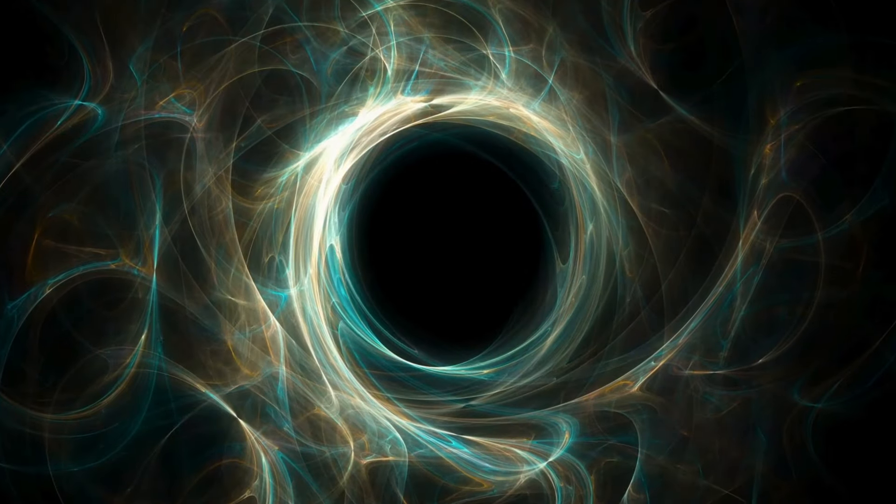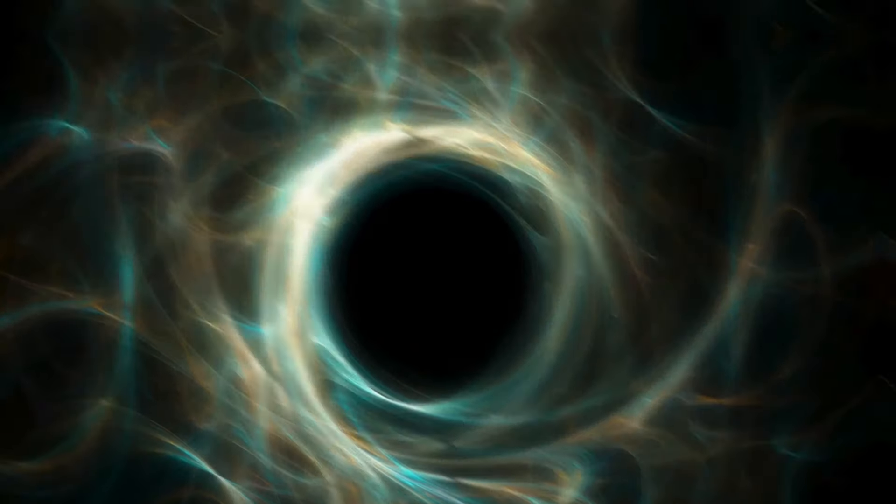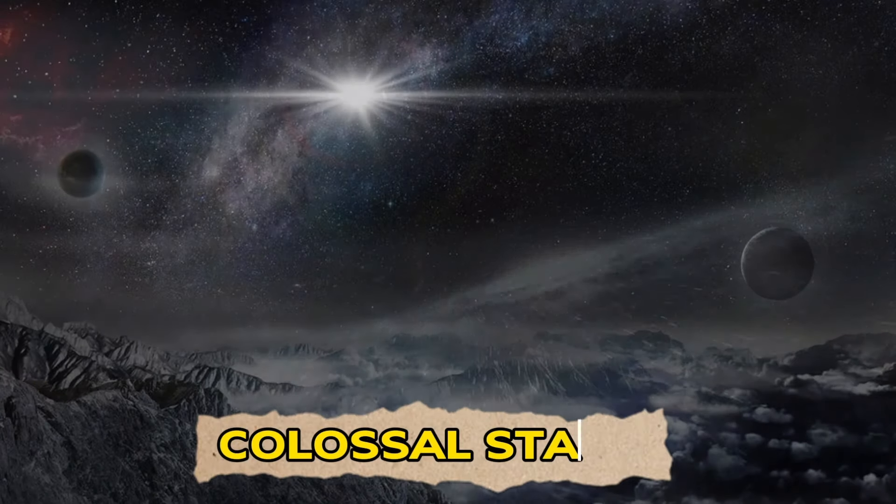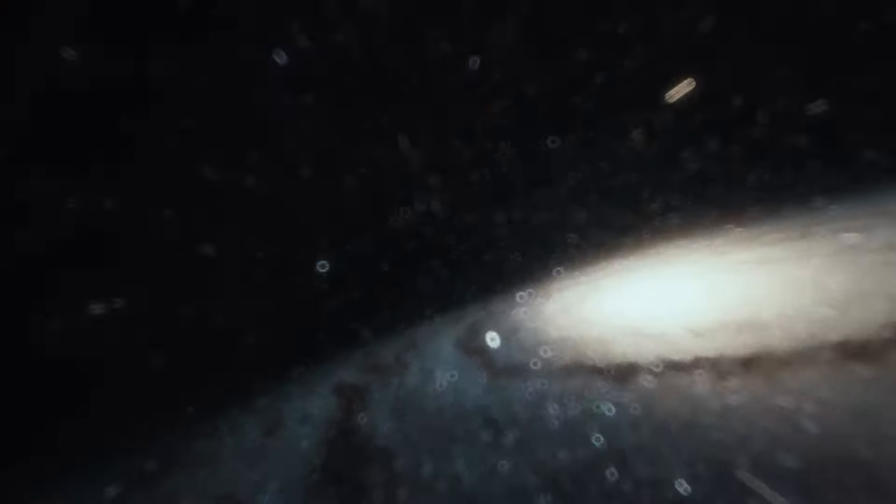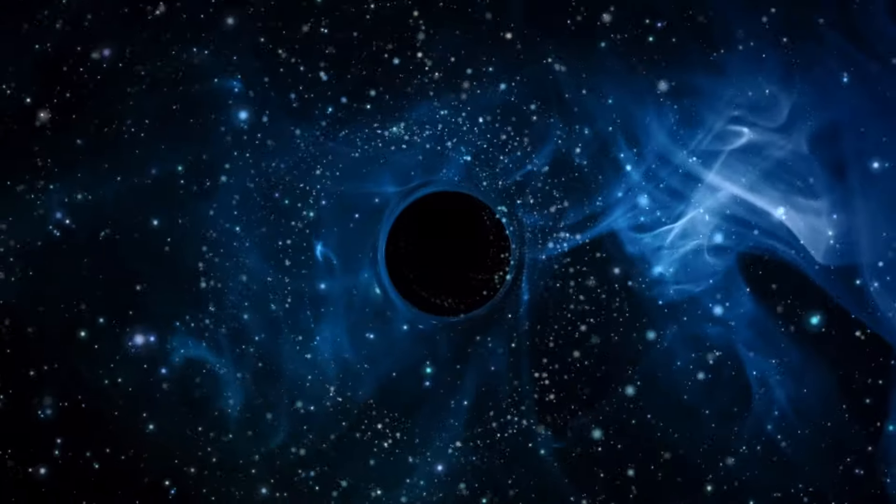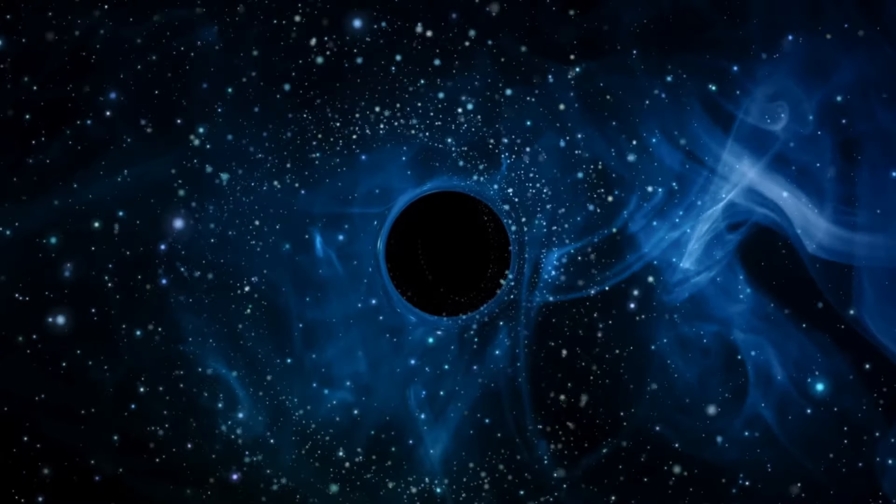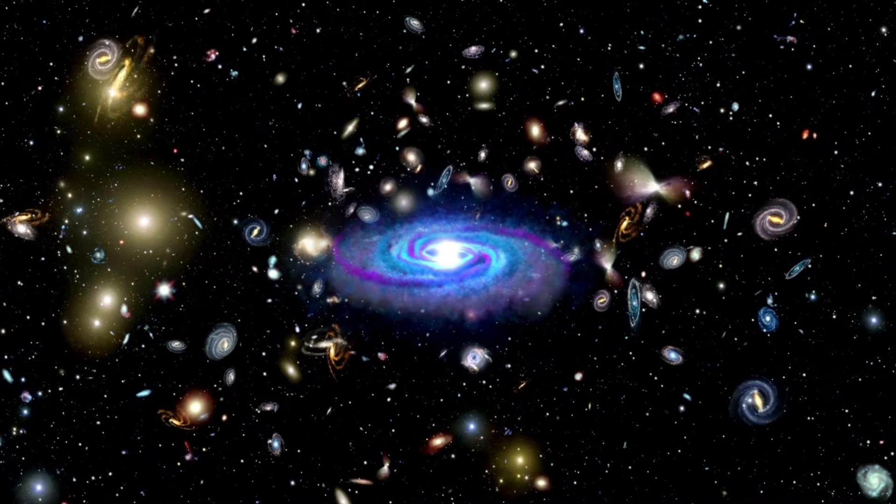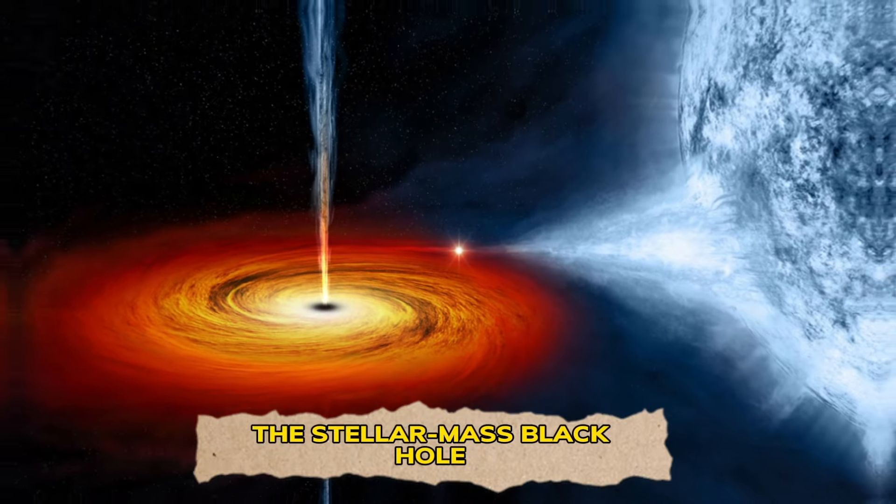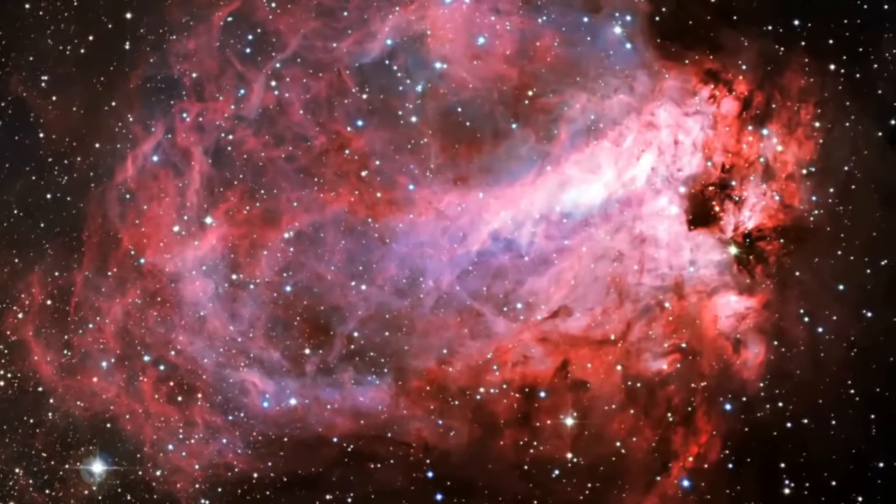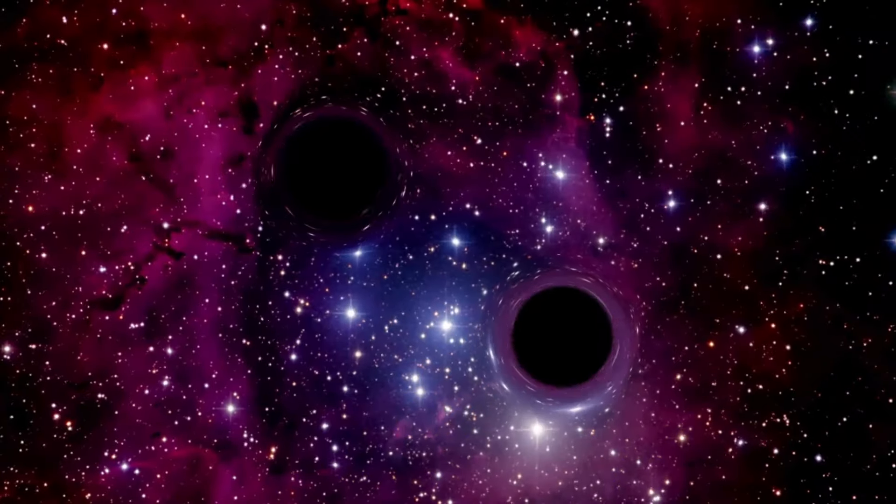The grandeur of black hole genesis unfolds in diverse forms, contingent upon their size and cosmic lineage. These mysteries might emerge from the remnants of colossal stars, their cores imploding under the weight of their ambitions, or through the clandestine convergence of galaxies, orchestrating the emergence of supermassive black holes, cosmic leviathans lurking at the hearts of galaxies. The most prevalent type, the stellar mass black hole, takes shape when a massive star exhausts its cosmic fuel and collapses, succumbing to its overwhelming gravitational embrace.